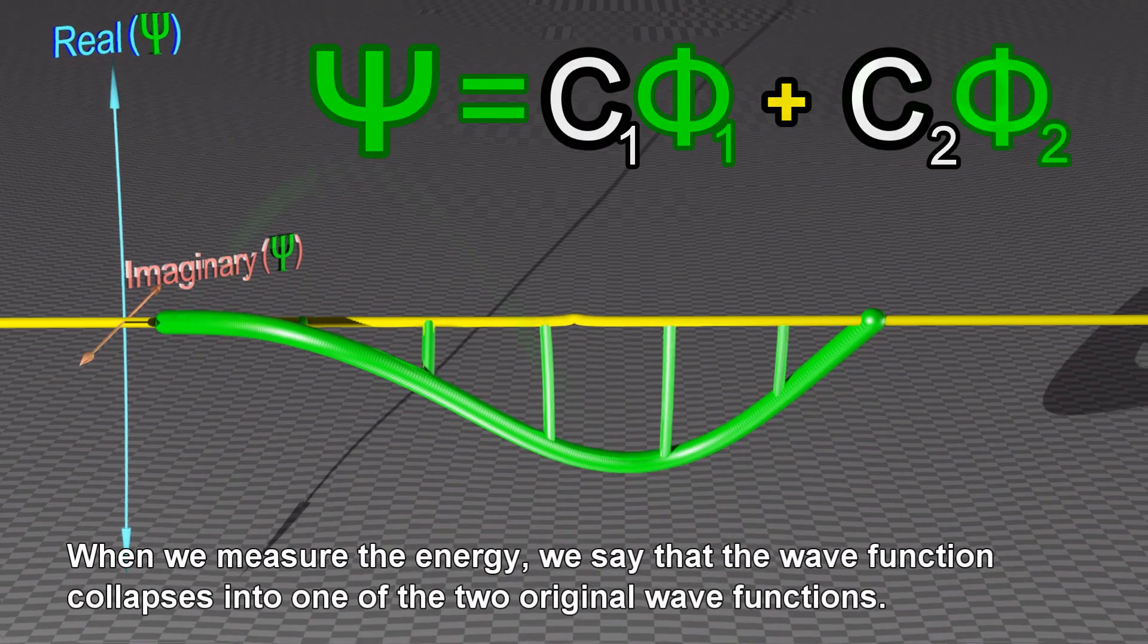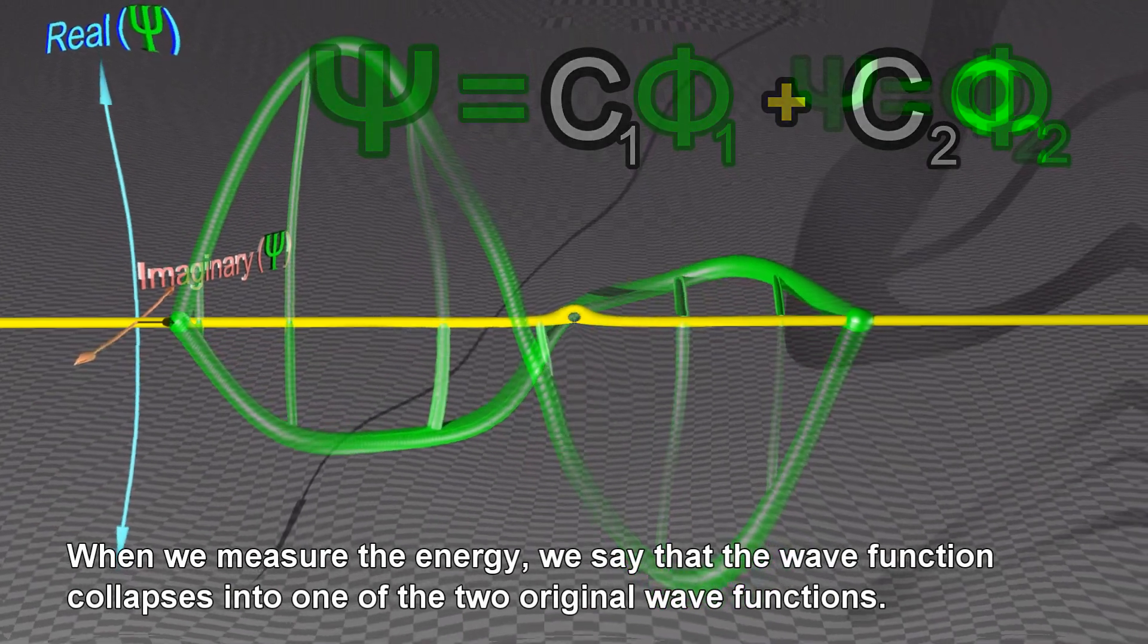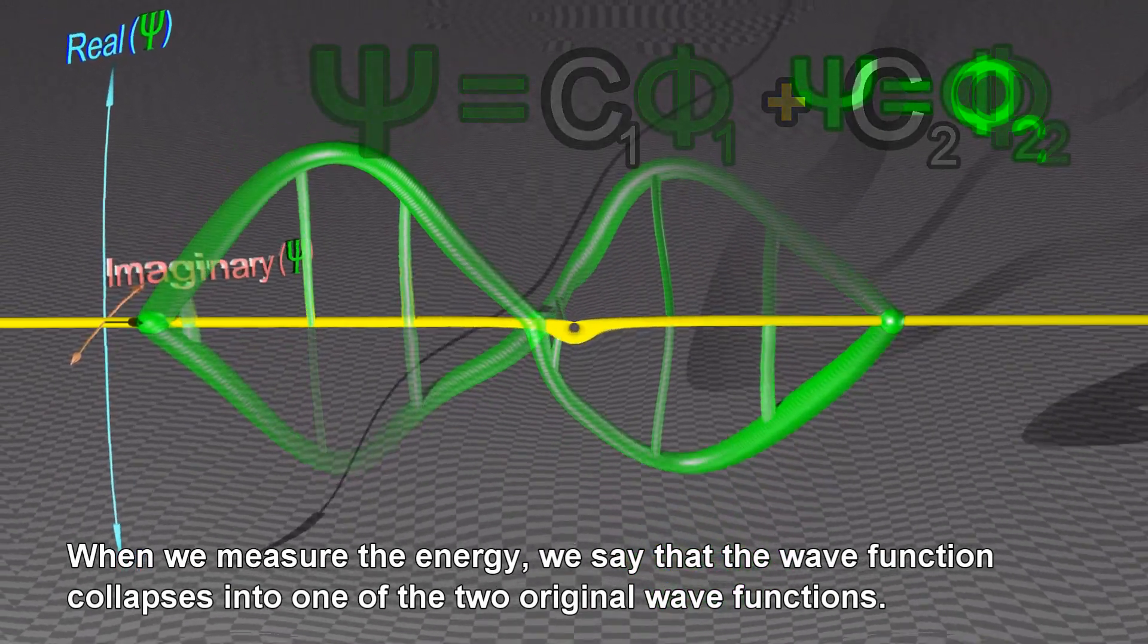When we measure the energy, we say that the wave function collapses into one of the two original wave functions.